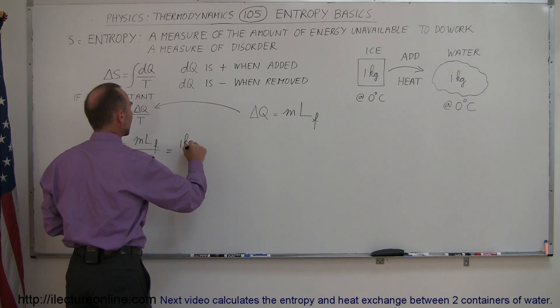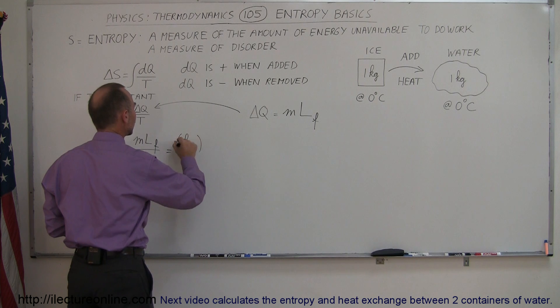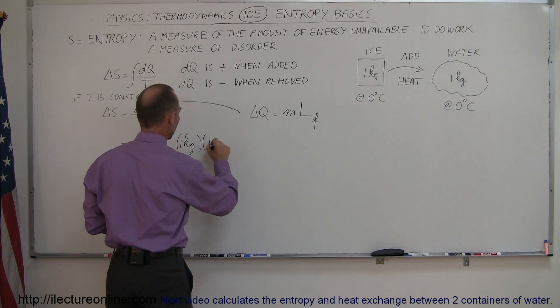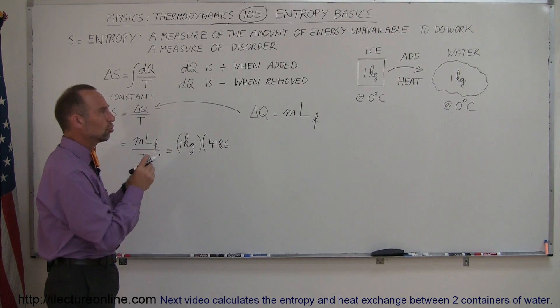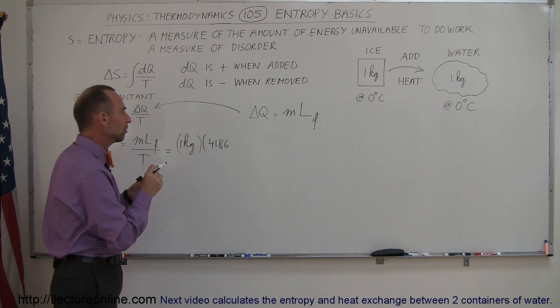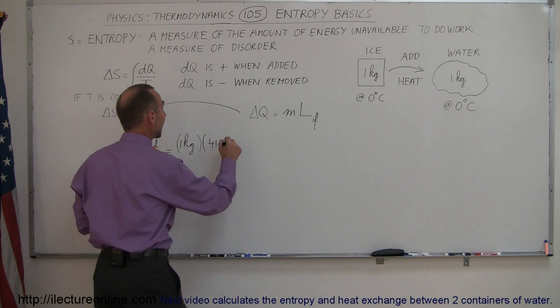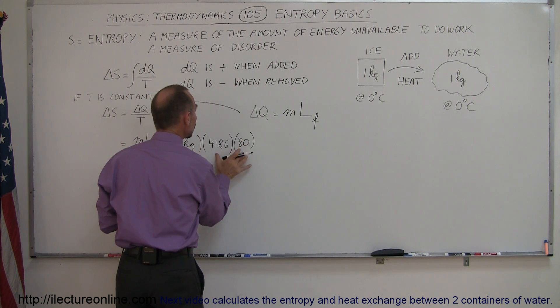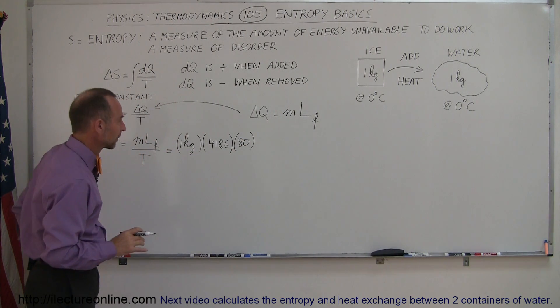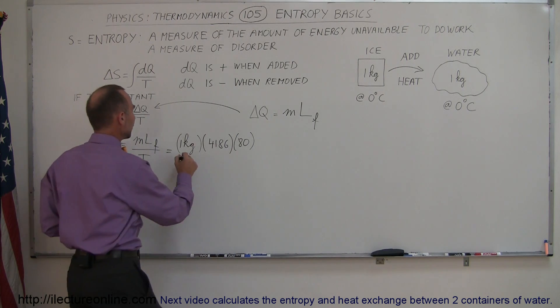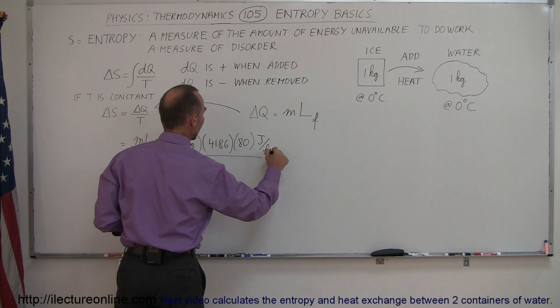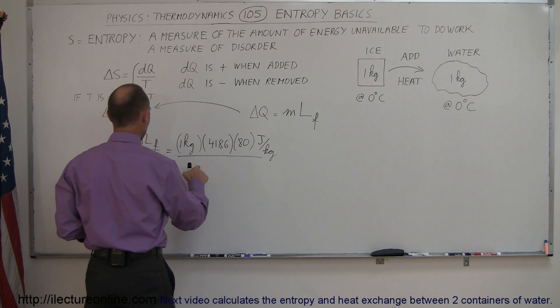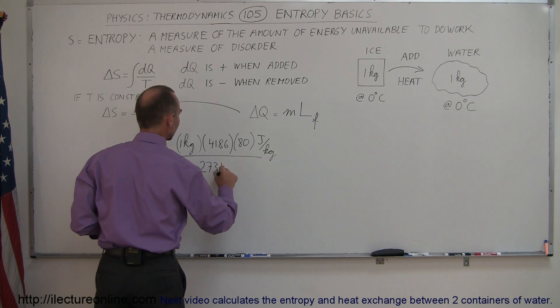Alright, so this would be one kilogram times the latent heat of fusion. Now that would be 4186 joules per kilogram to change one kilogram of water one degree centigrade. We multiply that times 80 which gives us the latent heat of fusion for ice for going from ice to water and then we divide that, that would be joules per kilogram, and then we have to divide that by the temperature which is 273 kelvin.